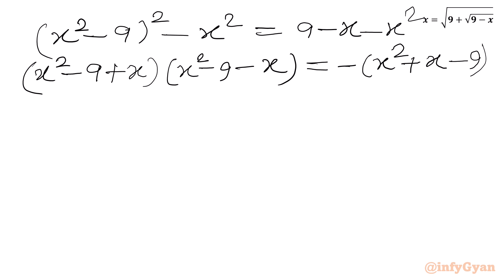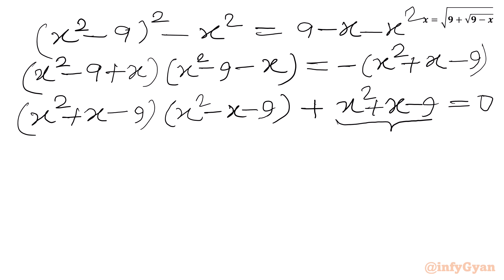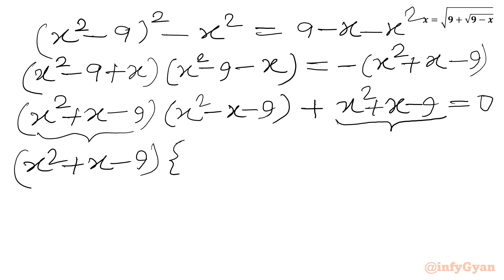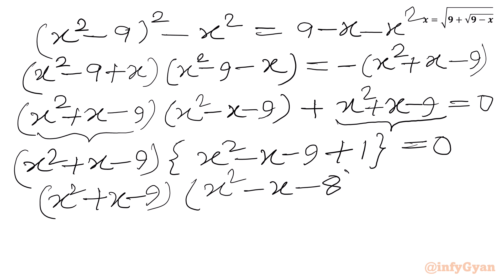Taking all terms to the LHS and taking negative common on the RHS gives us x squared plus x minus 9. We then take x squared plus x minus 9 as a common factor, leaving x squared minus x minus 8 in the other bracket. So we get (x squared plus x minus 9)(x squared minus x minus 8) equals 0.